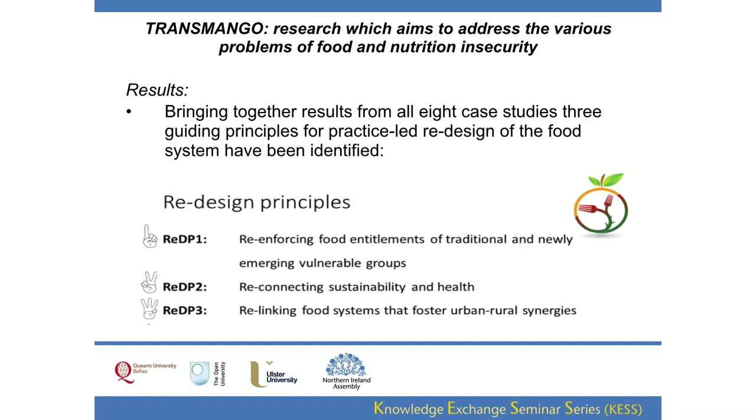The results from all eight case studies — with our partners in Wageningen leading this methodology — produced these redesign principles. These are practice-led redesign principles: we were interested in seeing how the shining lights of the food system, these bright spot initiatives, could be worked upwards and expanded and used elsewhere. The three redesign principles are: firstly, reinforcing food entitlements of traditional and newly emerging vulnerable groups; secondly, reconnecting sustainability and health; and thirdly, relinking food systems that foster urban-rural synergies.